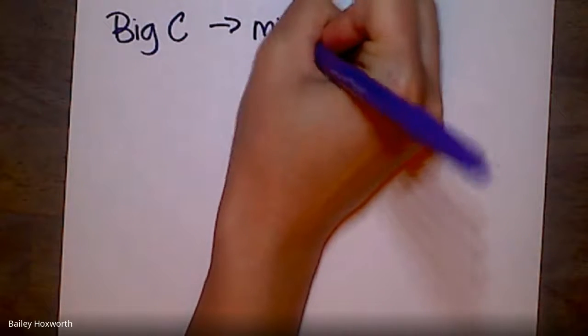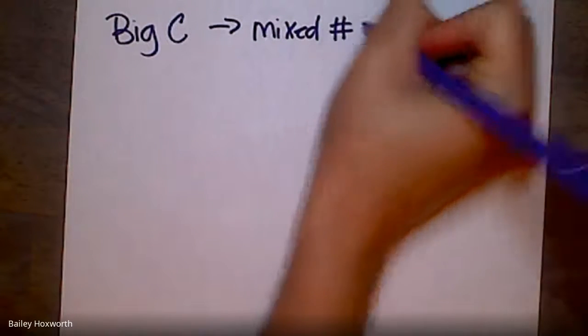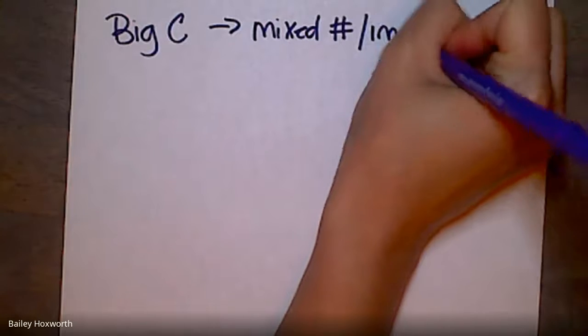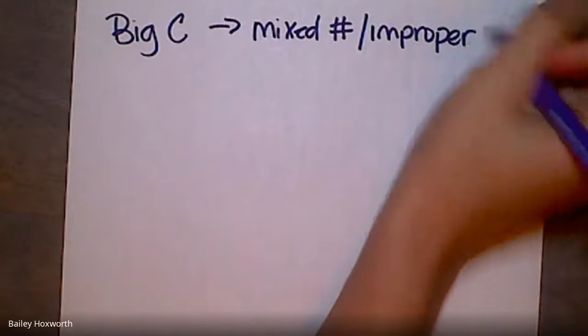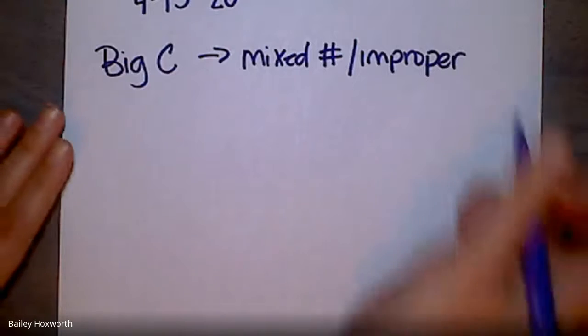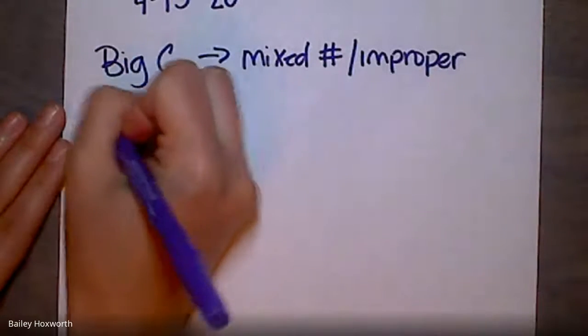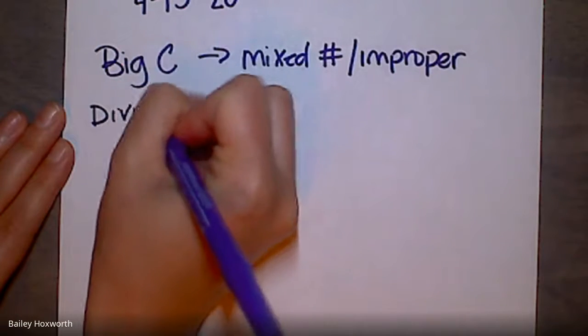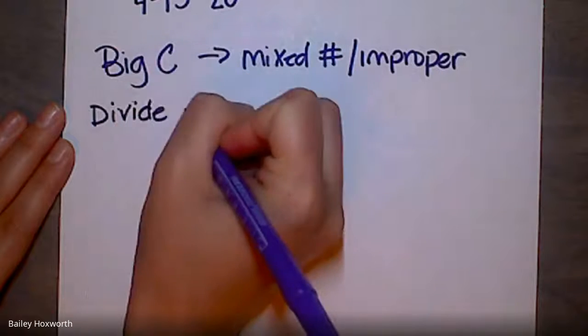We're going to be reviewing the Big C, and that is turning a mixed number into an improper fraction. And then when I need to turn an improper fraction into a mixed number, I know I just have to divide. So two things we're going to be looking at today: dividing and the Big C.